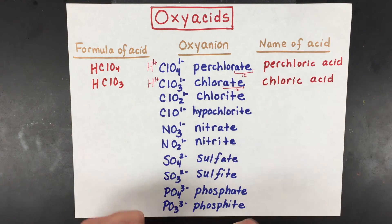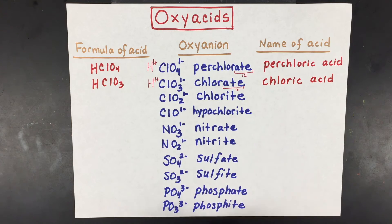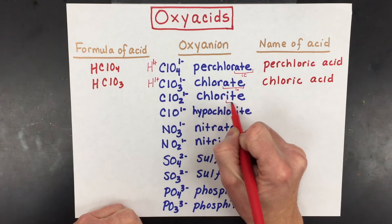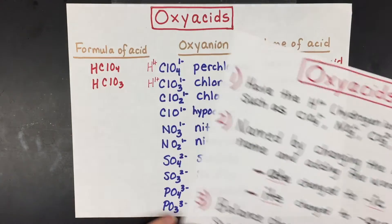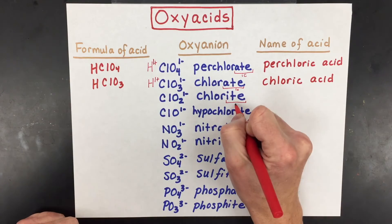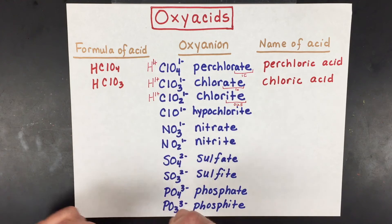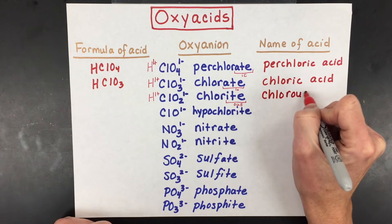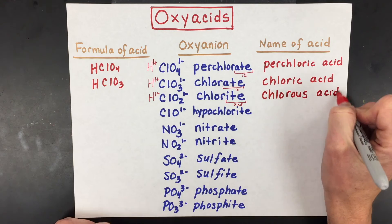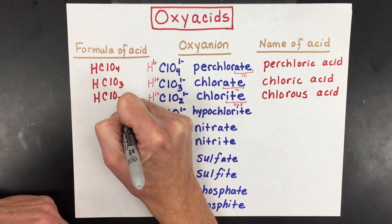Chloric acid sounds a lot like hydrochloric acid, but hydrochloric acid is when you have the chloride ion, not chlorate. The next one is chlorite. For oxyanions ending in 'ite,' the ending changes to 'ous.' To make it an acid you add the hydrogen ion, so the name will be chlorous acid, and the formula is HClO2.